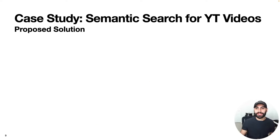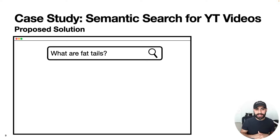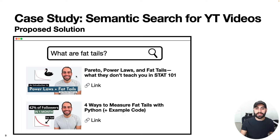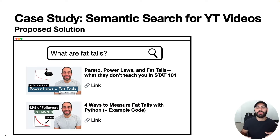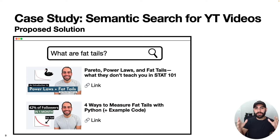Which brings up the proposed solution: a semantic search function for my YouTube videos. What this might look like is a webpage where users can type in a natural language query and the webpage returns search results of YouTube videos relevant to that query. This only addresses half the problem — too many topics — but the hypothesis is that if these topics are more easily searchable and easier to navigate, then more people will engage with the content, more people will share it, and that'll promote growth of the YouTube channel.